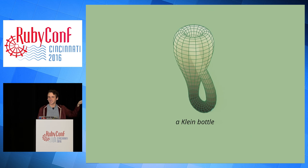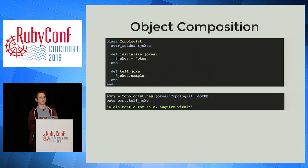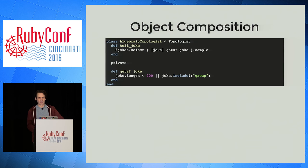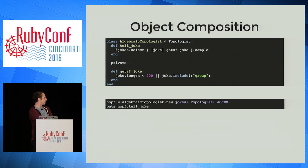Here's a Klein bottle for reference — it doesn't have an inside. Now, the important thing is we want to understand how our system extends. We have our topologists, and now let's say we want to model algebraic topologists in particular. Algebraic topologists are kind of notorious for not being terribly interested in things that aren't group theory and maybe have a short attention span. An algebraic topologist is clearly a type of topologist — it's right there in the name — so that's a subclass for sure. They have a particular way of telling jokes: they grab one from their collection that they actually care about.